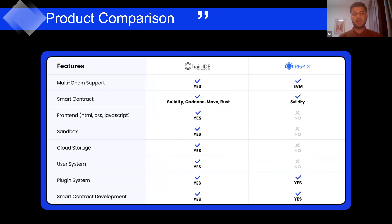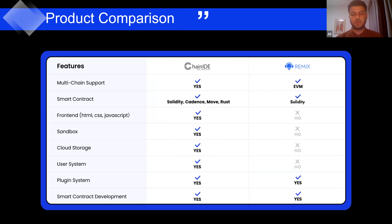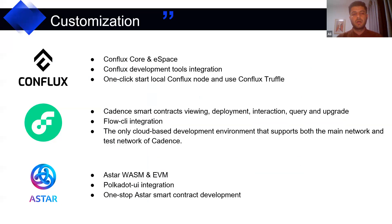Chain IDE supports sandboxes — you can set up Ganache and Truffle environments and install web frameworks like React. Chain IDE also provides cloud storage for your projects, unlike Remix which stores projects on local storage. Both Chain IDE and Remix provide plugin systems for Web3 users, and both provide testnet, devnet, and mainnet support for different blockchains.